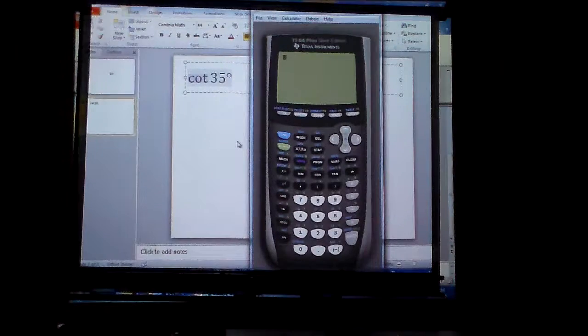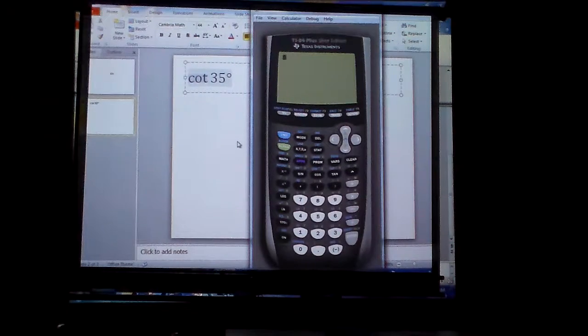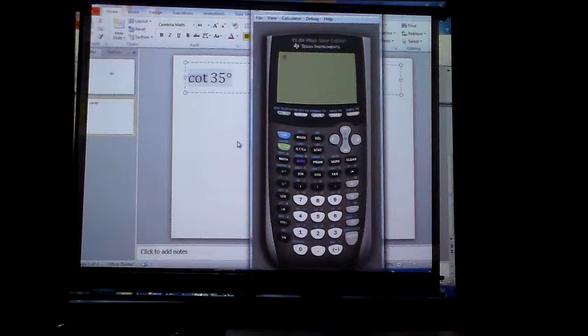Okay, how do you find the cotangent of 35 degrees? Well, the first thing you have to do is this.